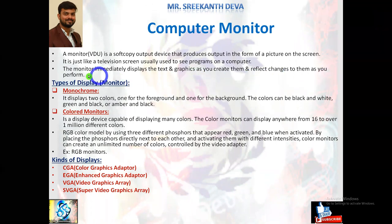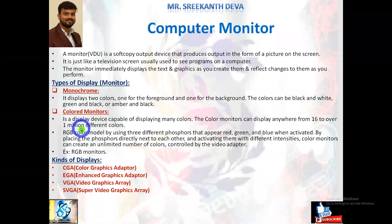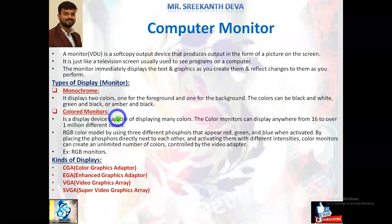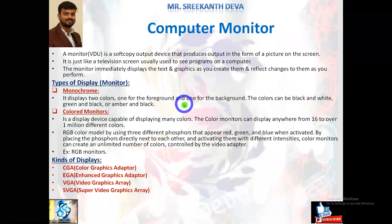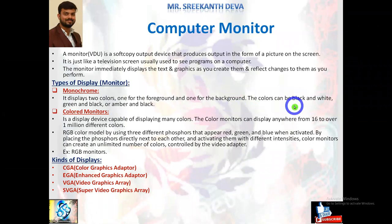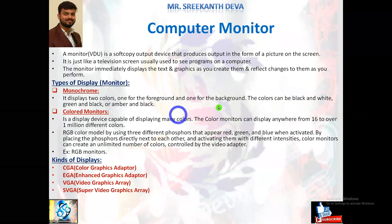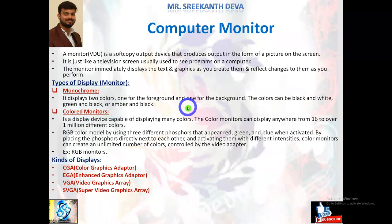There are different types of displays in monitors. One is called monochrome — 'mono' meaning single — which displays only two colors: white and black (one for foreground, one for background). Monochrome monitors may use black-and-white, green-and-black, or amber-and-black combinations, similar to old black-and-white televisions.